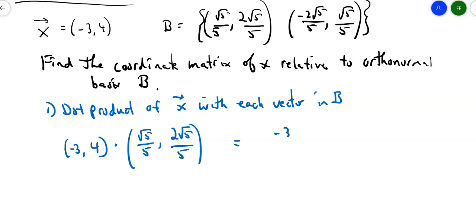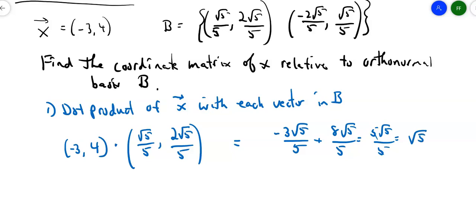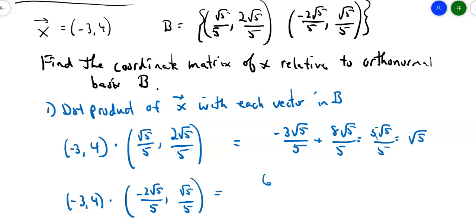The first dot product is (-3, 4) · (√5/5, 2√5/5), which gives me -3·(√5/5) + 4·(2√5/5), which is -3√5/5 + 8√5/5. Common denominators, radicals are the same, so I get 5√5/5, which is just √5. Now the second dot product: (-3, 4) · (-2√5/5, √5/5). Negative 3 times negative 2 gives positive 6√5/5, and then 4·(√5/5) gives 4√5/5, which totals 10√5/5 = 2√5.